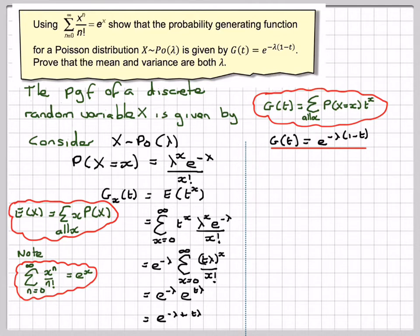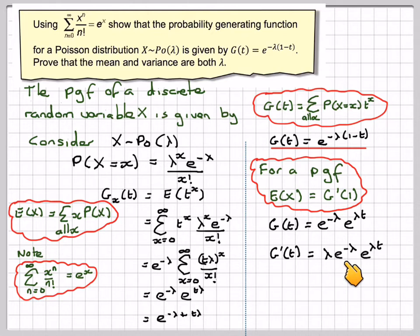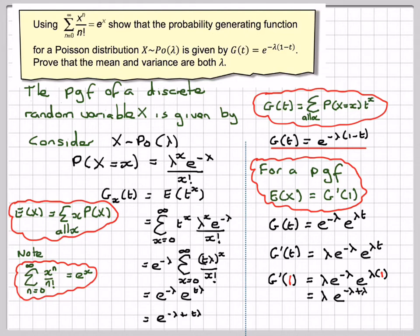Now we prove that the mean and variance are both λ. For a probability generating function, the mean E[X] equals g'(1). Expanding first: g(t) equals e to the minus λ times e to the λt. Differentiating gives g'(t) equals λ e to the minus λ times e to the λt. So g'(1) equals λ e to the minus λ times e to the λ, which gives λ times e to the minus λ plus λ, which equals λ times e to the 0 equals λ, as expected.